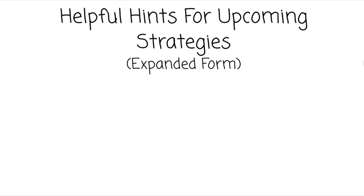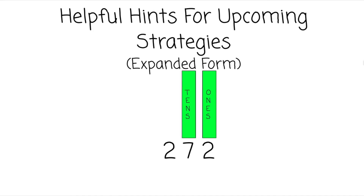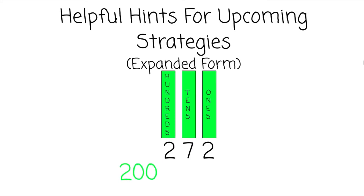Our last helpful tip is to review expanded form. This 2 is in the ones column — the ones column is always furthest to the right. Then we have the tens column, and to the left of the tens is the hundreds column. This 2 in the hundreds column represents 200. This 7 is in the tens column — it represents 70. And this 2 is in the ones column — it represents 2. When writing in expanded form, it's important to remember to add those addition symbols.